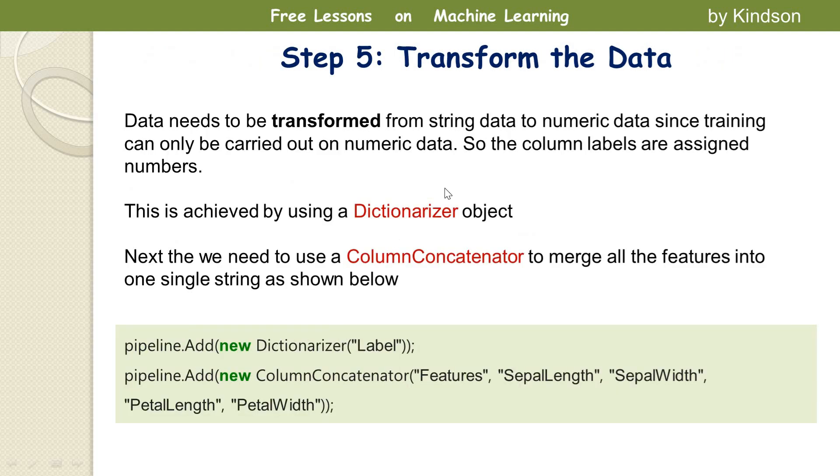So a pipeline is provided to do this. So how to create a pipeline is to simply declare a new pipeline, declare the data path where your data is located, and then you are good to go.